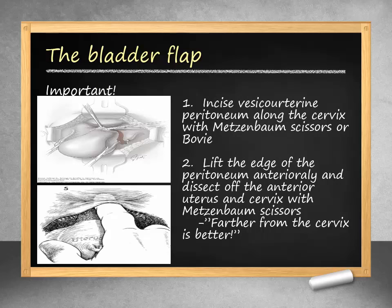Now that we have freed the adnexa, we will focus on creating our bladder flap. The vesicouterine peritoneum is first incised along the cervix with Metzenbaum scissors. Next, the peritoneum is lifted anteriorly and the bladder is further dissected off the anterior cervix with blunt or sharp dissection. Remember, grasp farther from the cervix — farther from the cervix is better.